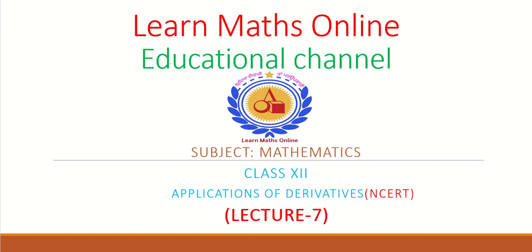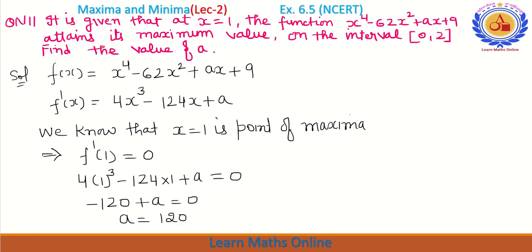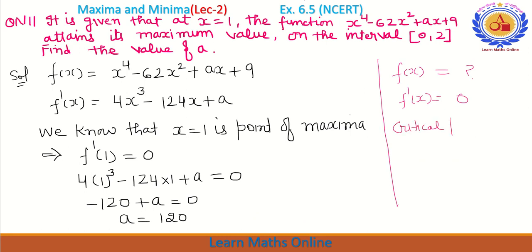Let us start. We have discussed the basics before — how to maximize and minimize functions. There are 3-4 main steps. First, we are given f(x). We calculate f'(x) and set it equal to zero to find the critical points.